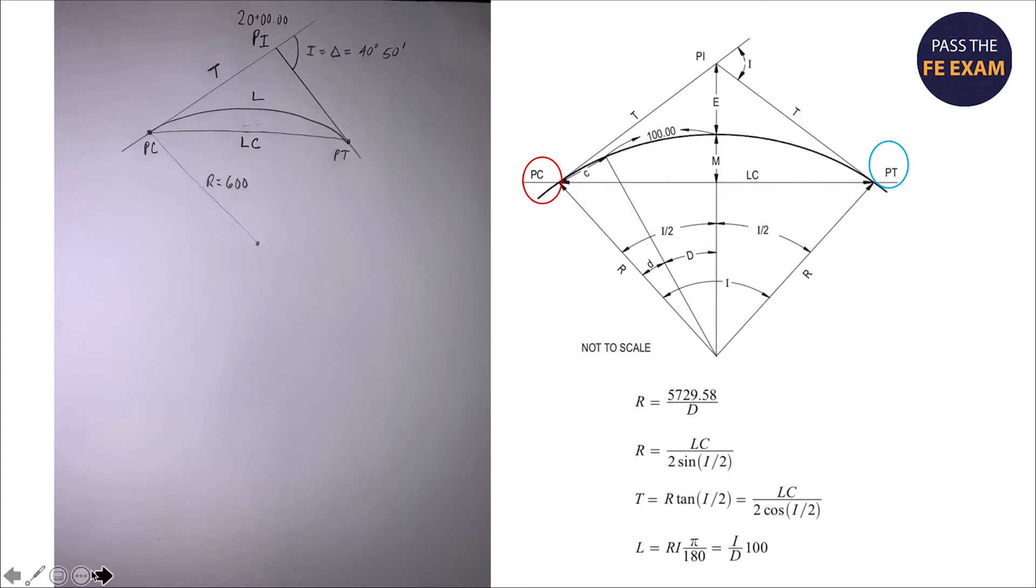Once we have the PC station, we can add the length of the curve between the PC and PT to figure out the station of the PT. Something to be aware of is that the length is not shown, or the L is not shown in this picture. They're only showing the LC. I've shown it on my sketch over here to the left. That's the L that we're looking to solve for.